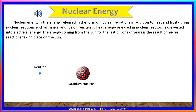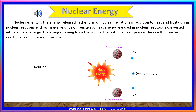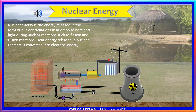Nuclear energy is the energy released in the form of nuclear radiation, in addition to heat and light, during nuclear reactions such as fission and fusion. Heat energy released in a nuclear reactor is converted into electrical energy. The energy coming from the sun for billions of years is the result of nuclear reactions taking place on the sun.